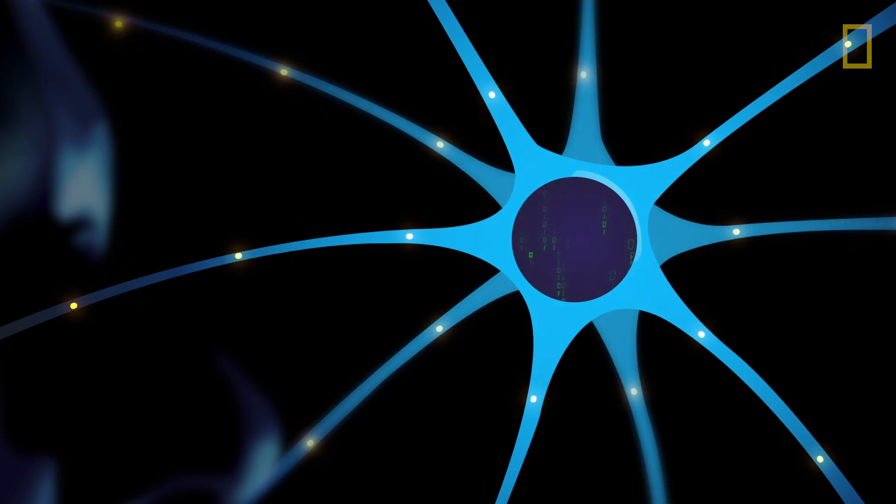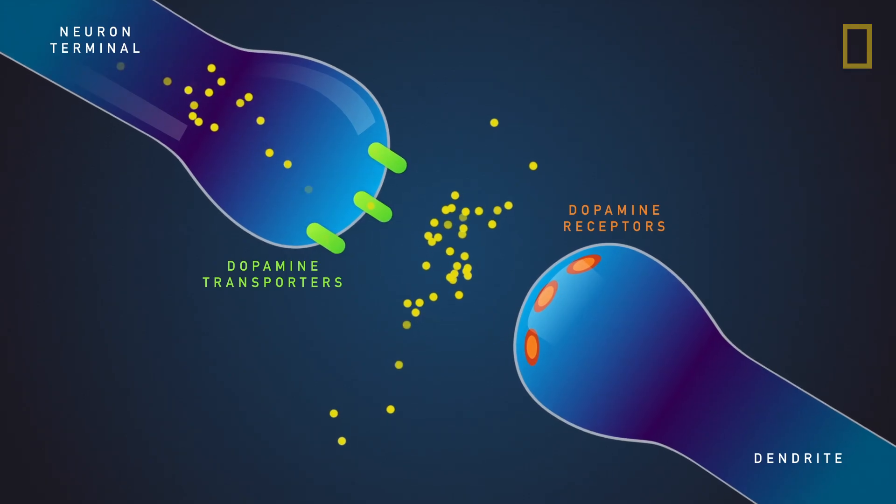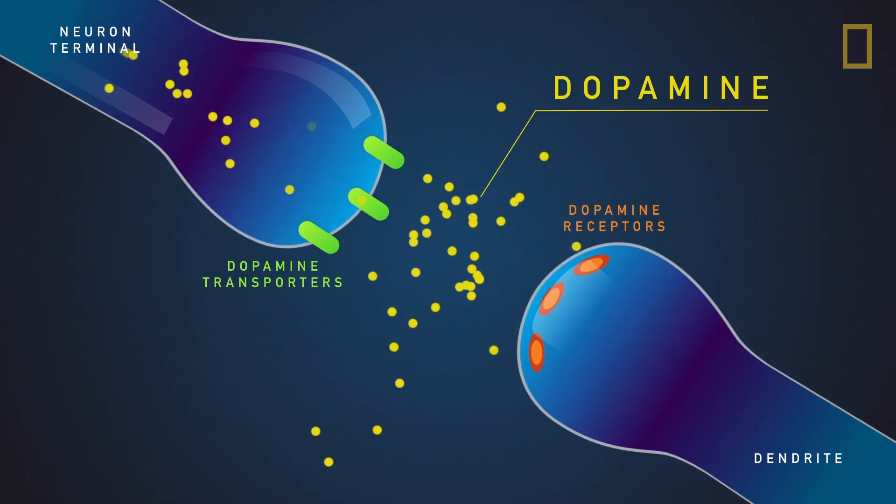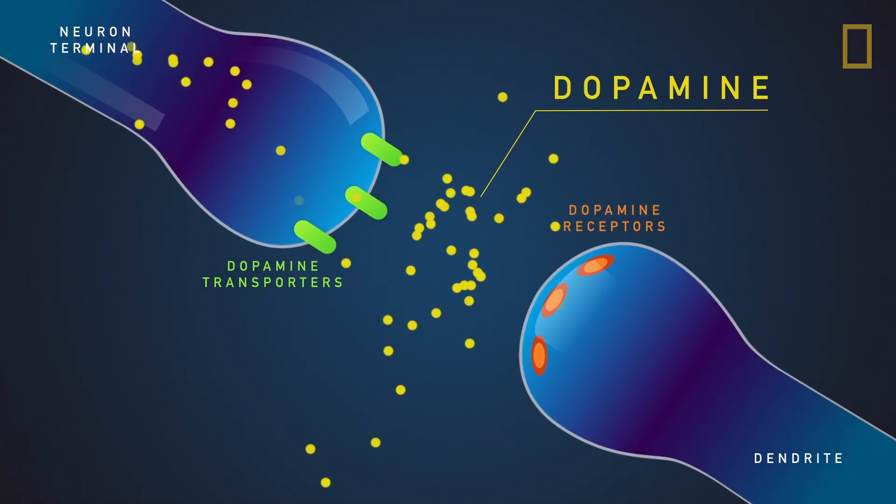So what happens when drugs artificially flood these pathways with dopamine? For one thing, the rush can rewire your brain to want more drugs, and thus create addiction.